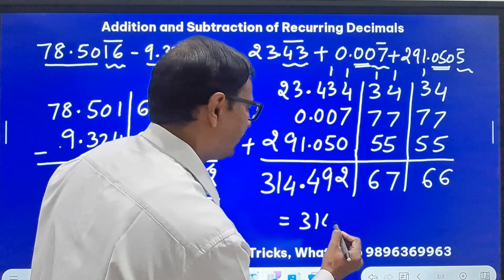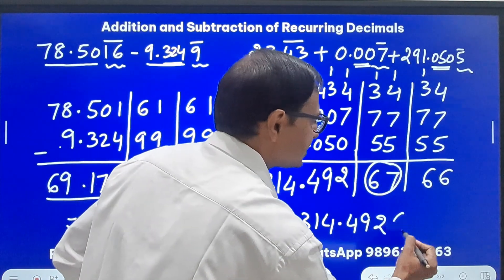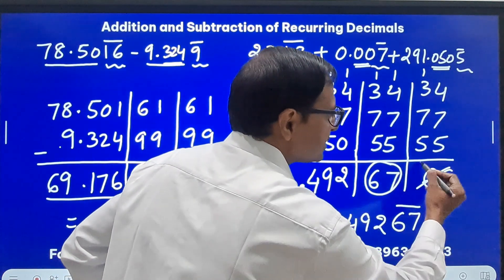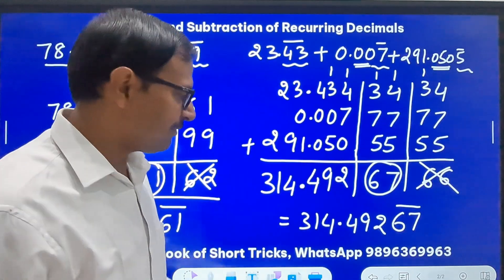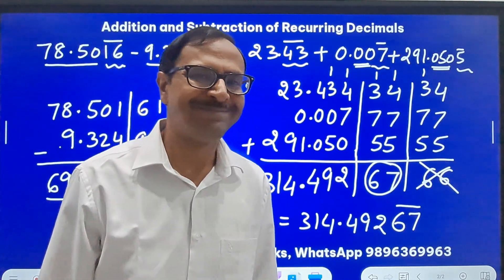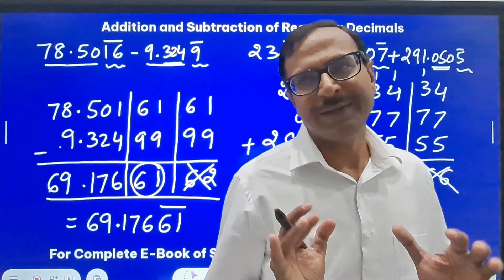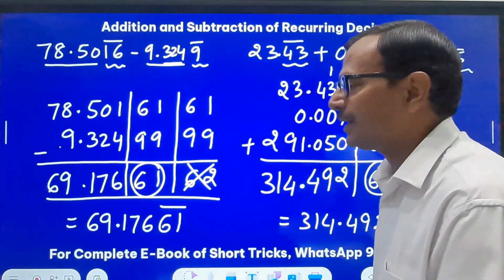So what is the answer? 314.492, this is the recurring part, 67 with a bar, and this is to be ignored. And your answer for the question is 314.49267 bar. Even if you understand 80 to 90 percent of this when I am demonstrating it, it is enough and the remaining part will come with practice.